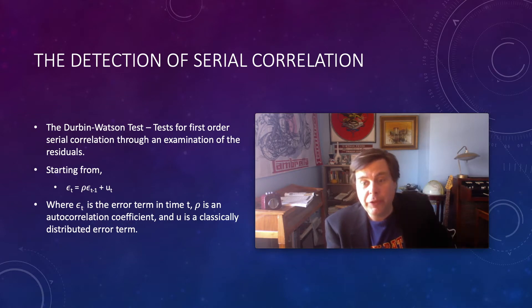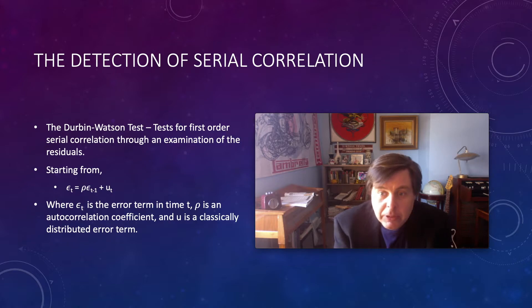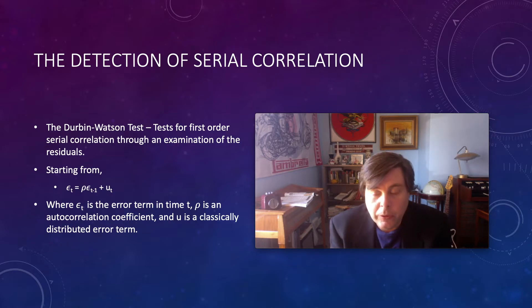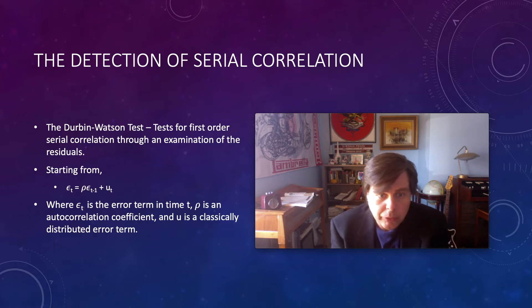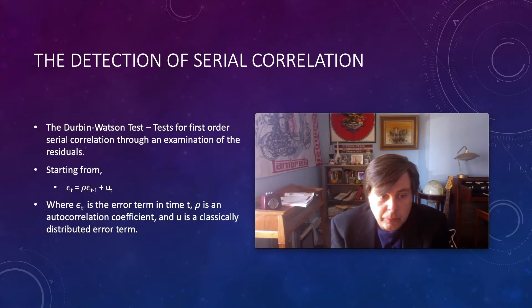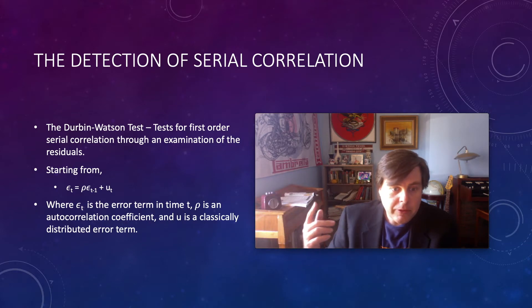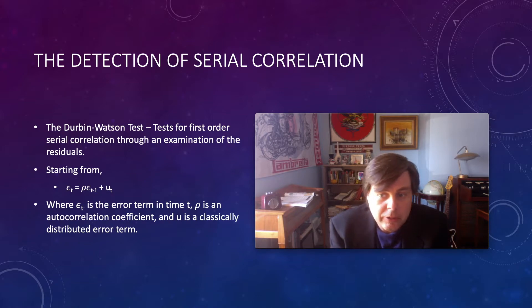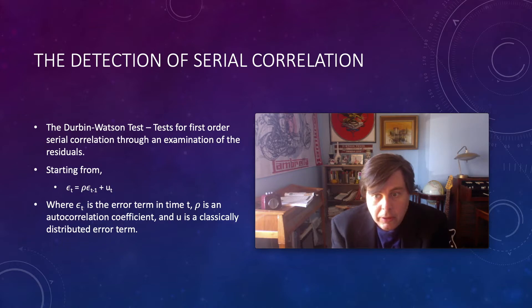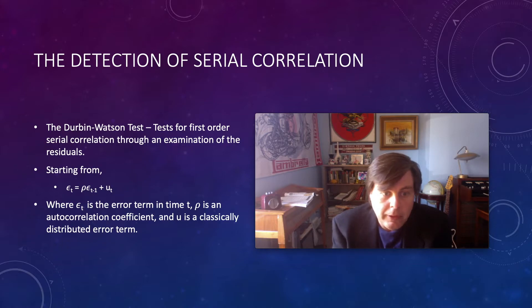A second step is to review the Durbin-Watson statistic, which is generally presented at the bottom of your regression output. The Durbin-Watson test starts from the idea that we have an error term e_t that is somehow correlated with the error term in previous periods — e_{t−1}. We also have some other random term characterizable as a classically distributed error, and we can express the functional relationship between the current and previous error term using the autocorrelation coefficient ρ (rho).